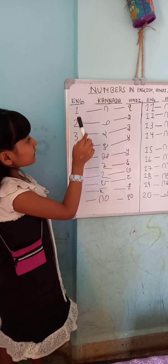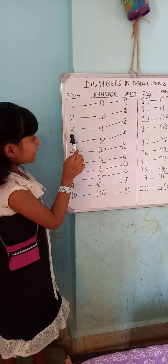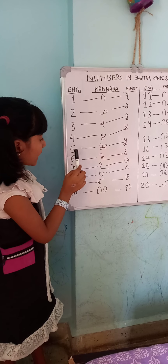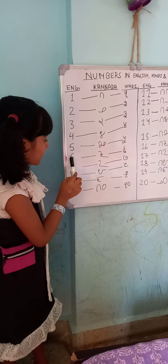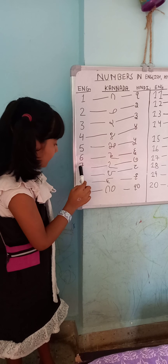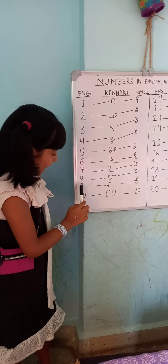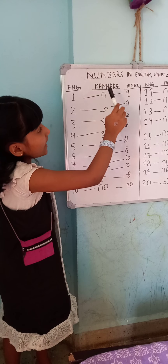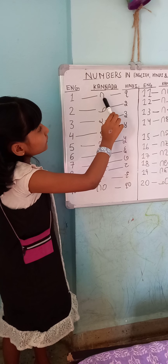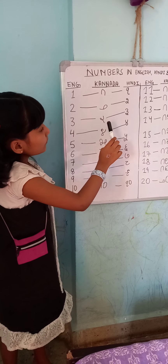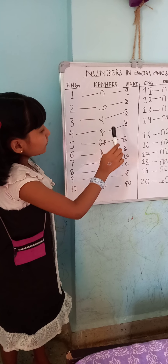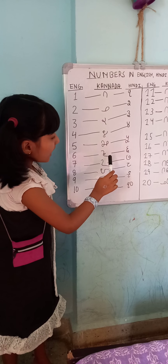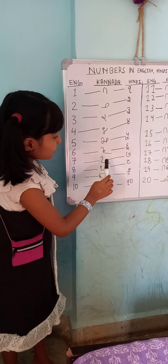In English: 1, 2, 3, 4, 5, 6, 7, 8, 9, 10. In Kannada: Vandhu, Eradu, Muru, Nalku, Aidu, Aadu.